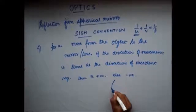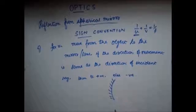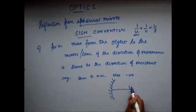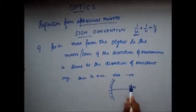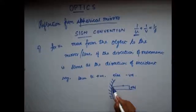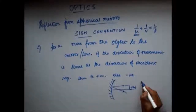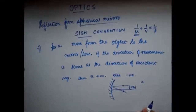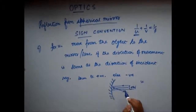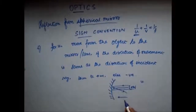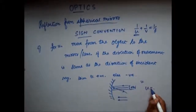For example, let's take a concave mirror. The object is here and rays of light are incident like this and get reflected. To find the sign of u, I move from the object to the mirror — so I am moving in this direction. And what is the direction of the incident ray? The direction of the incident ray is also in the same direction. Since both are in the same direction, u is positive in this case.